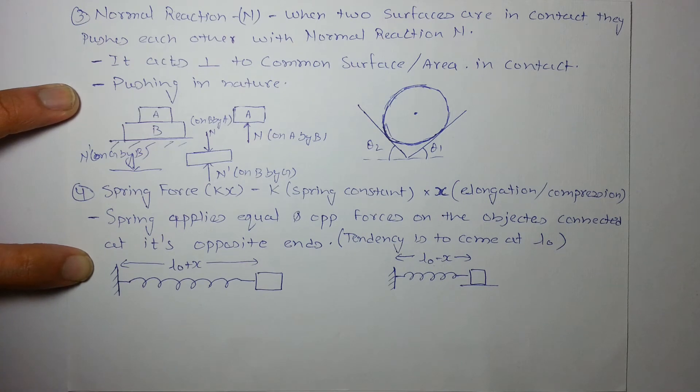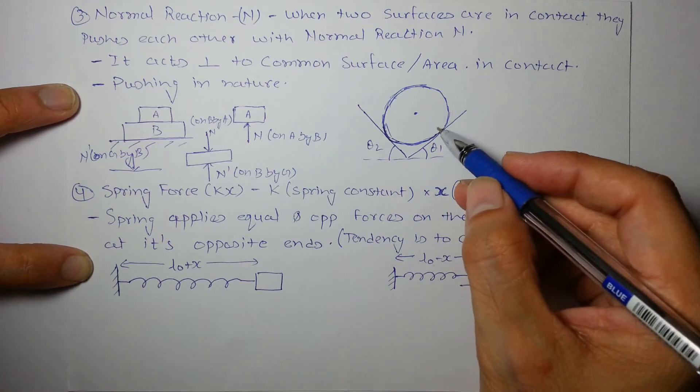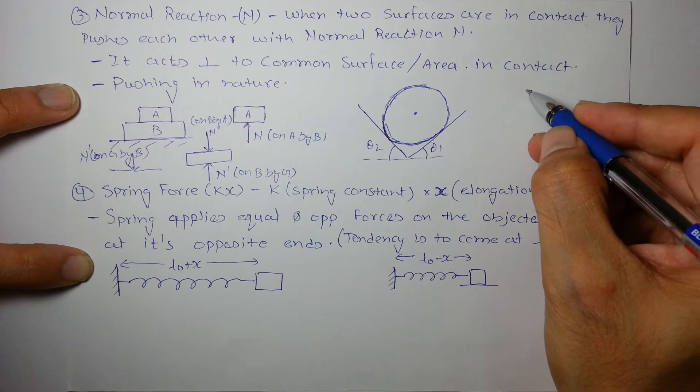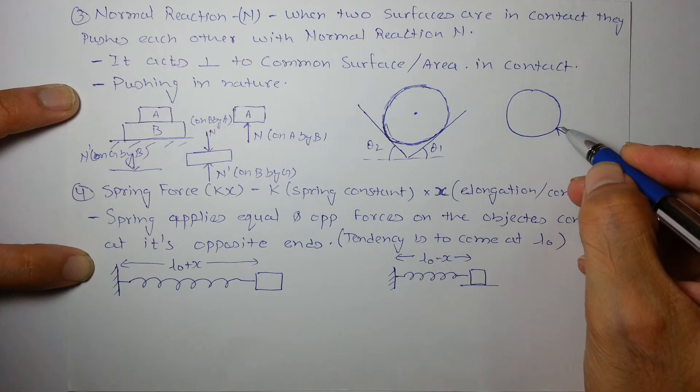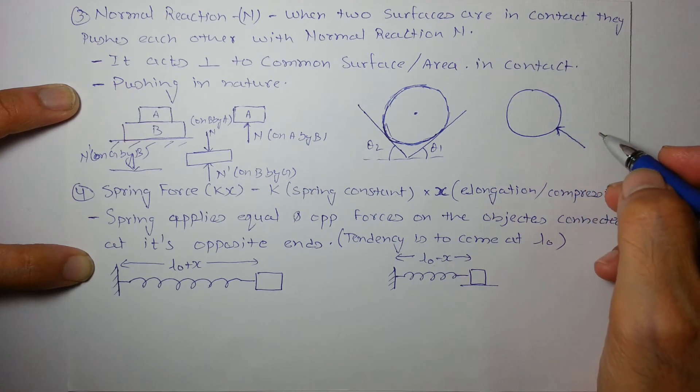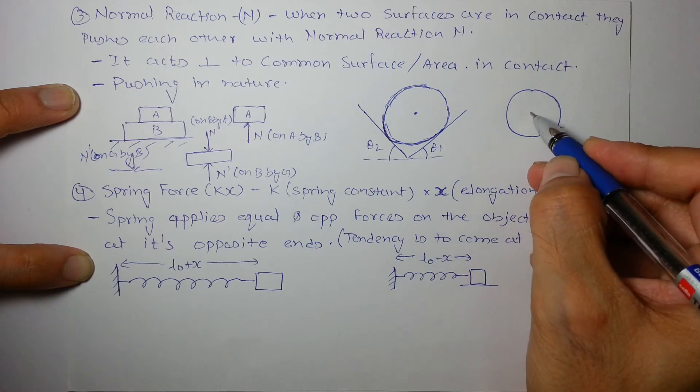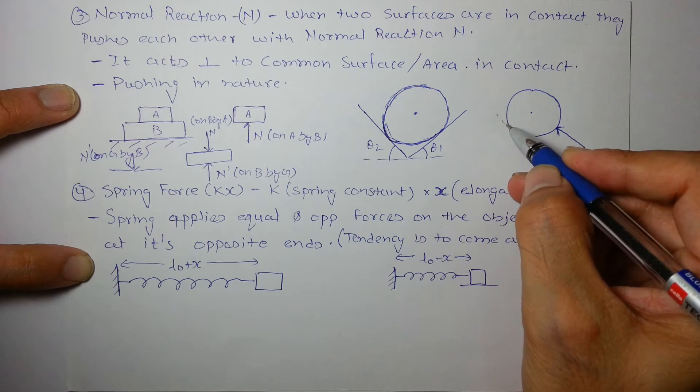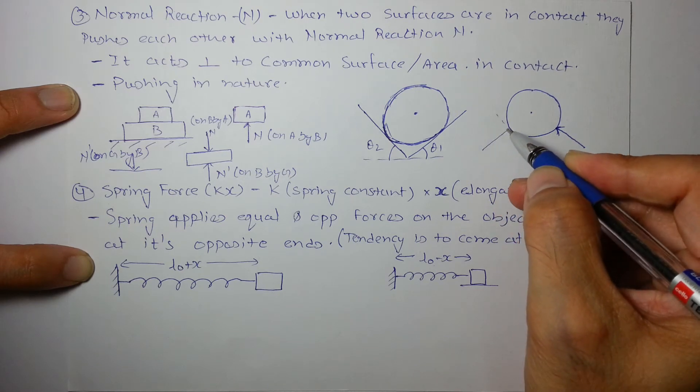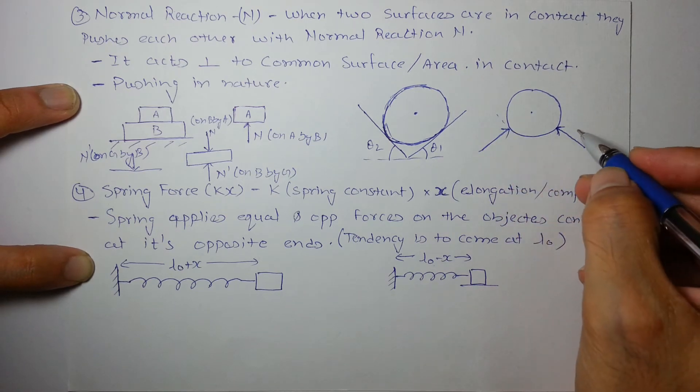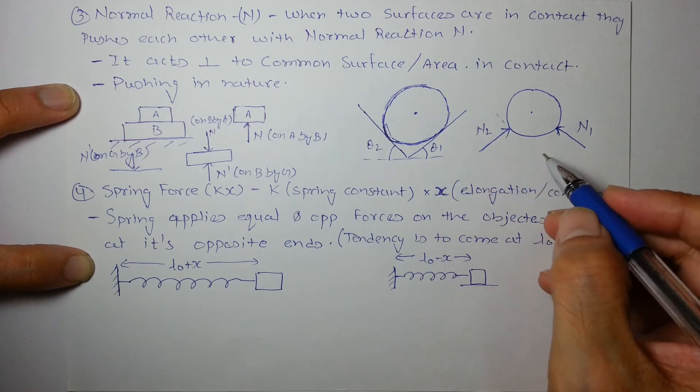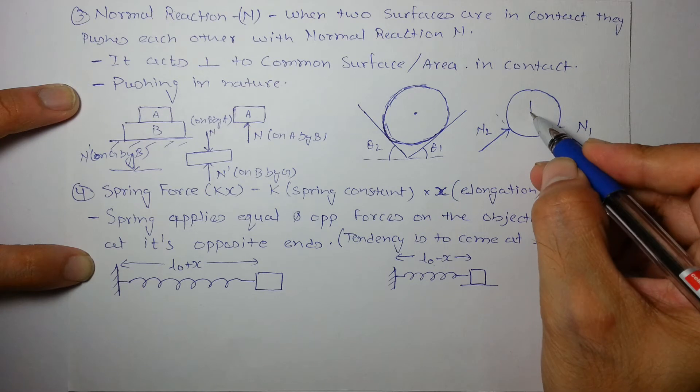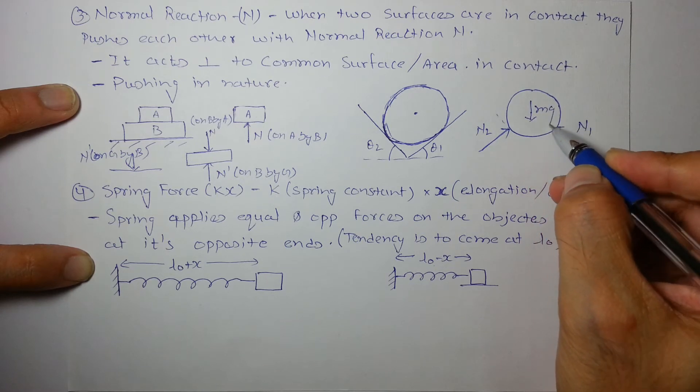Similarly, this sphere will experience a force from this surface. Again, this surface will try to push it, and this surface will also try to push it like this. So there will be two normal reactions N1 and N2 from the surface, and one weight mg which is vertically down.